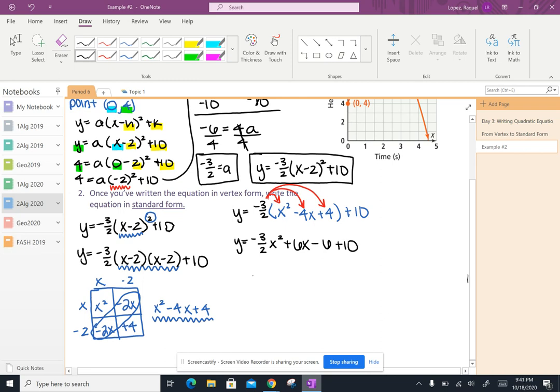And then I can go ahead and simplify. So I have y equals negative 3 halves x squared plus 6x plus 4.